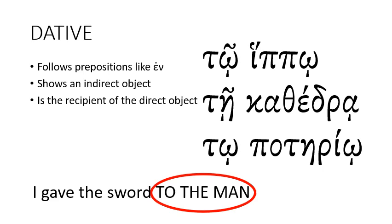The marker for the dative case is iota, which you can see here. It looks like a little mark underneath the letter omega in 'to ipo'. Or 'tei cathedra' — you can see this little mark there. That mark is actually supposed to stand for the letter iota; you don't pronounce it, it just lets you know that this is the dative case. So you have 'to ipo', 'tei cathedra', and 'to poterio'.